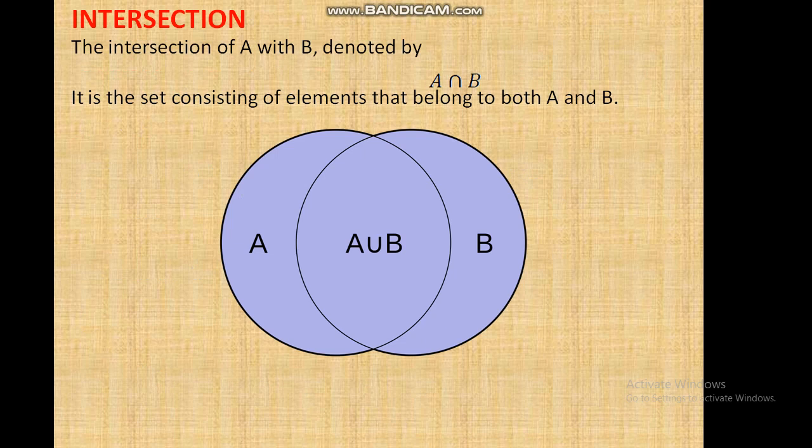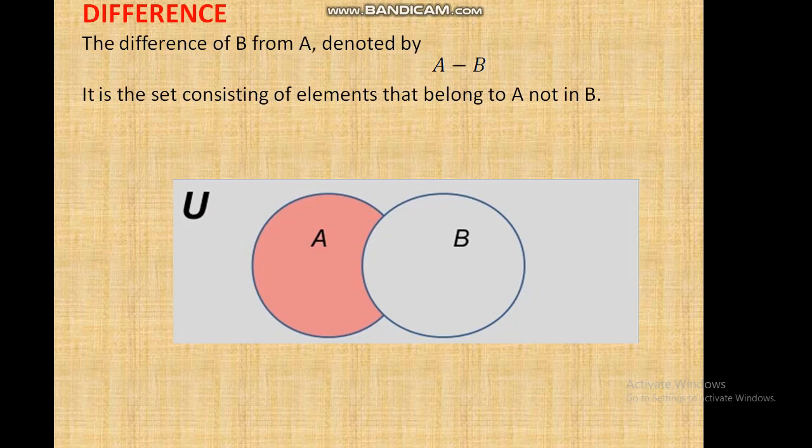Intersection – The intersection of A with B is denoted by A ∩ B. It is the set consisting of elements that belong to both A and B. Difference – The difference of B from A is denoted by A − B. It is the set consisting of elements that belong to A but not in B.